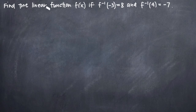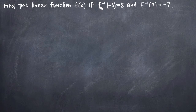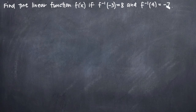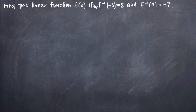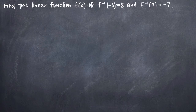Today we're going to be talking about how to find the linear function f of x, given that f to the negative 1 — the inverse function of f — satisfies f⁻¹ of negative 3 equals 8, and that the inverse function of f at 4 equals negative 7. So essentially we've been given two points on the line that is the inverse function of f of x, and asked to find the original function f of x, knowing that f of x is also a linear function, meaning that it's a line.